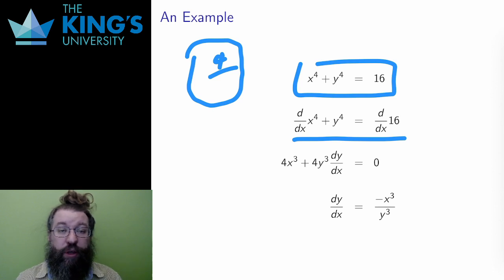The x derivative is 4x cubed, ordinary x derivative. The chain rule derivative is 4y cubed times the derivative of the inside, dy over dx, whatever that is. And the derivative of the constant 16 is 0.